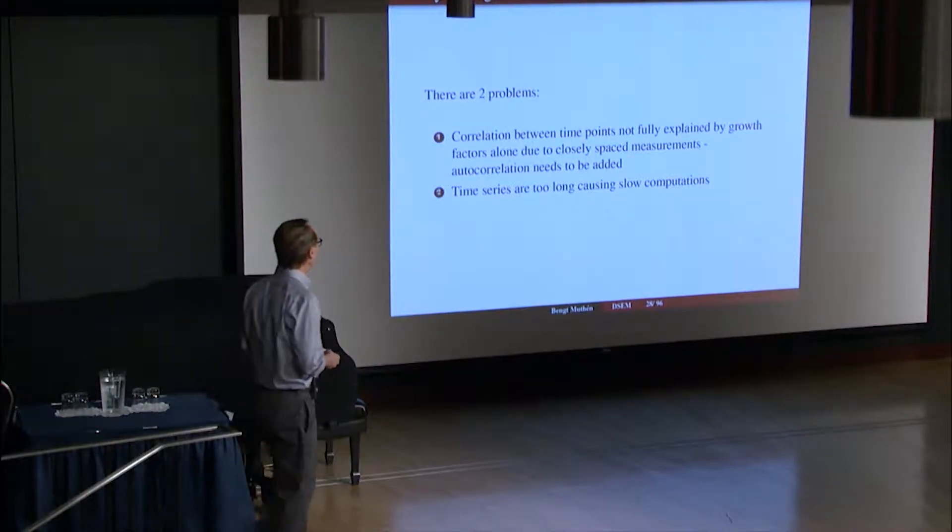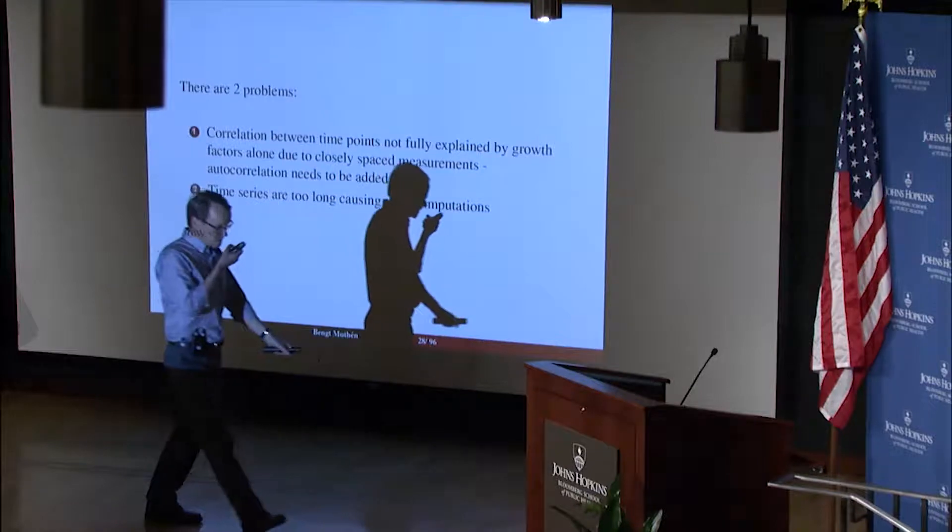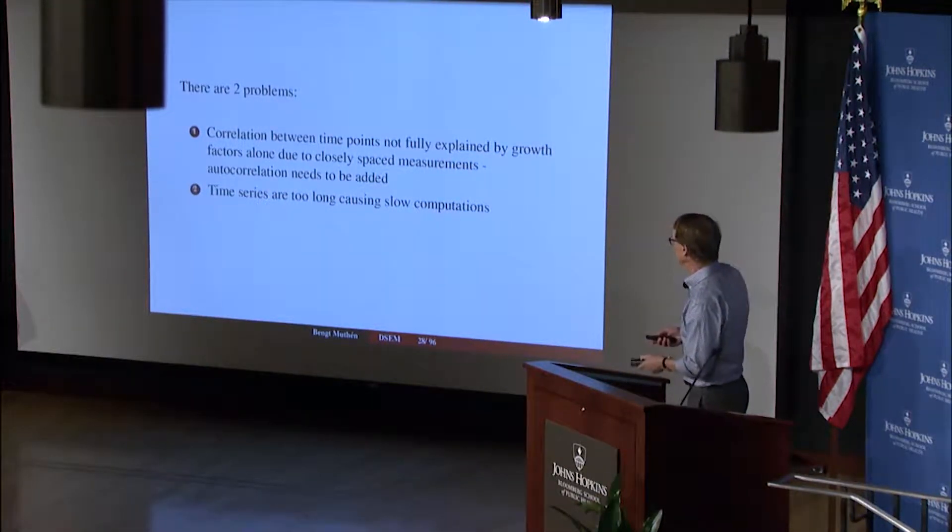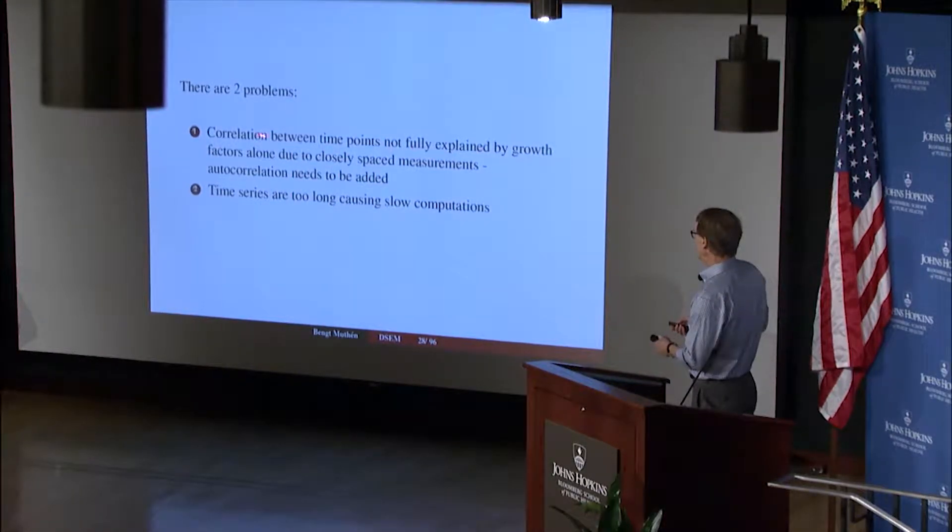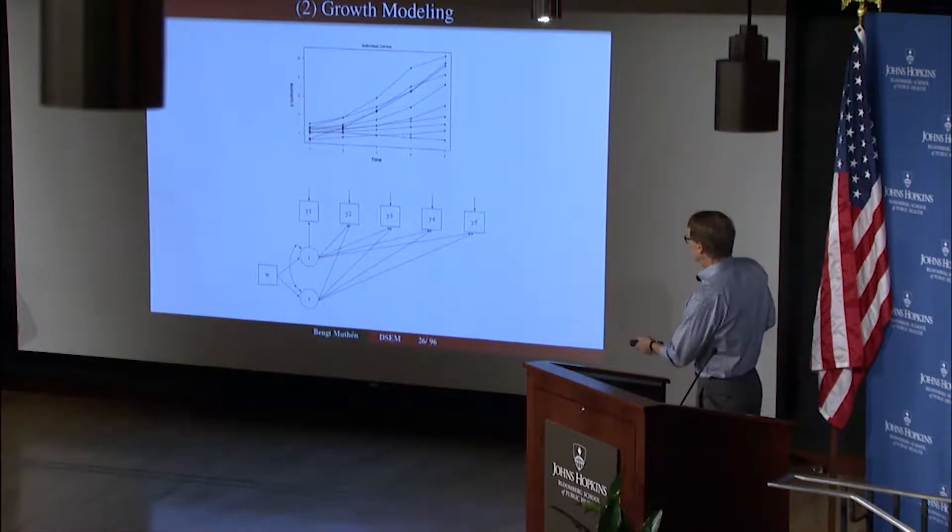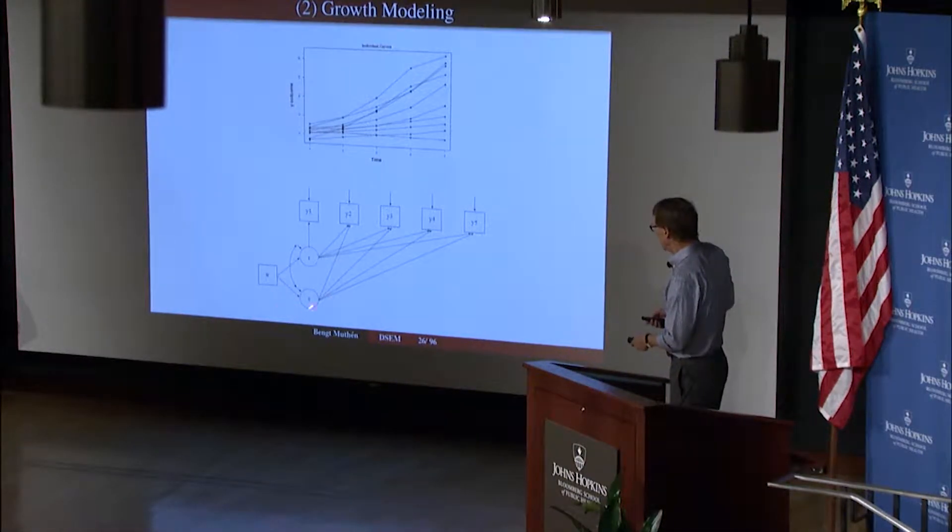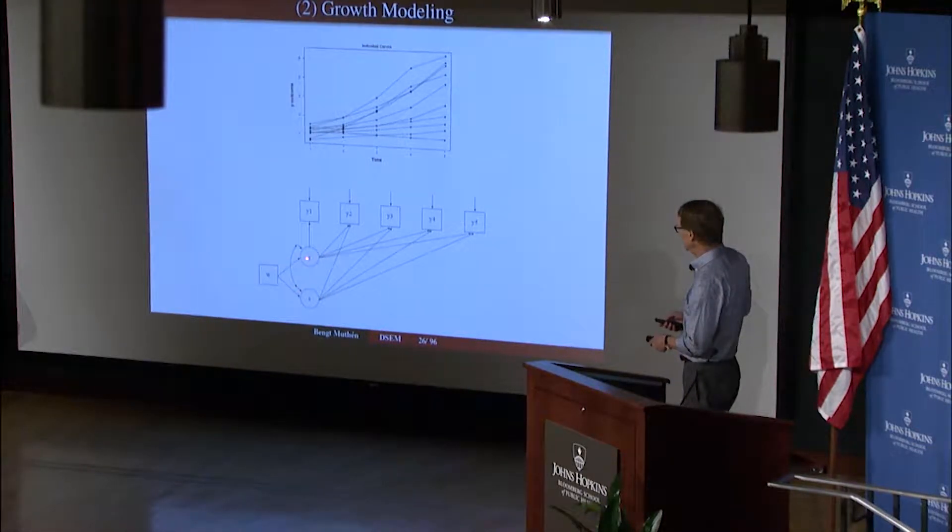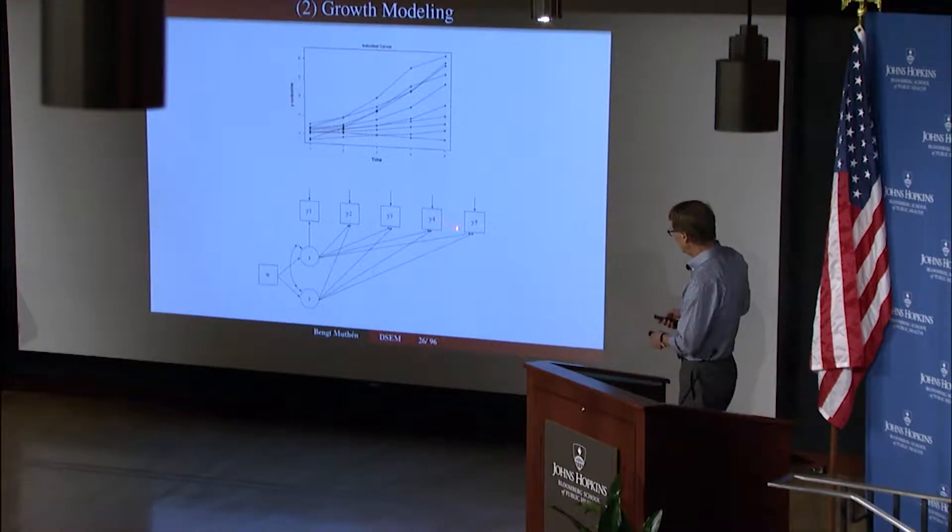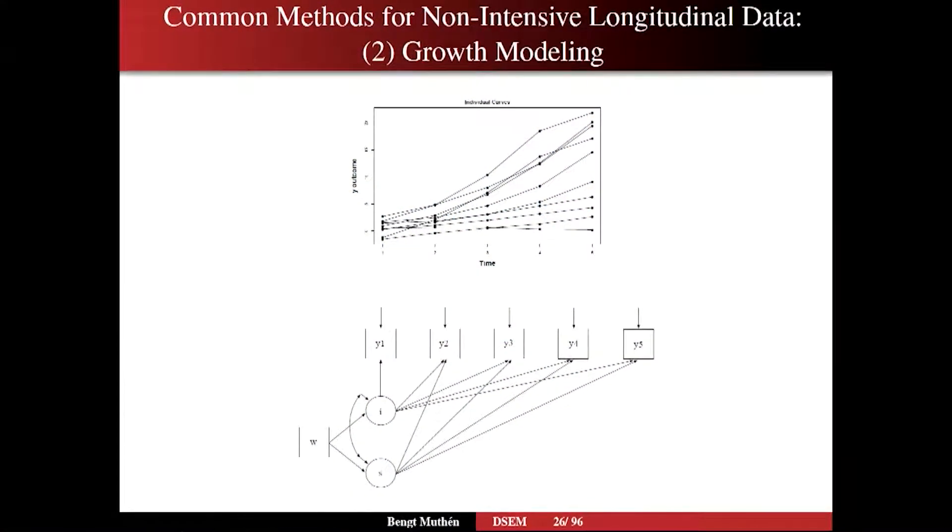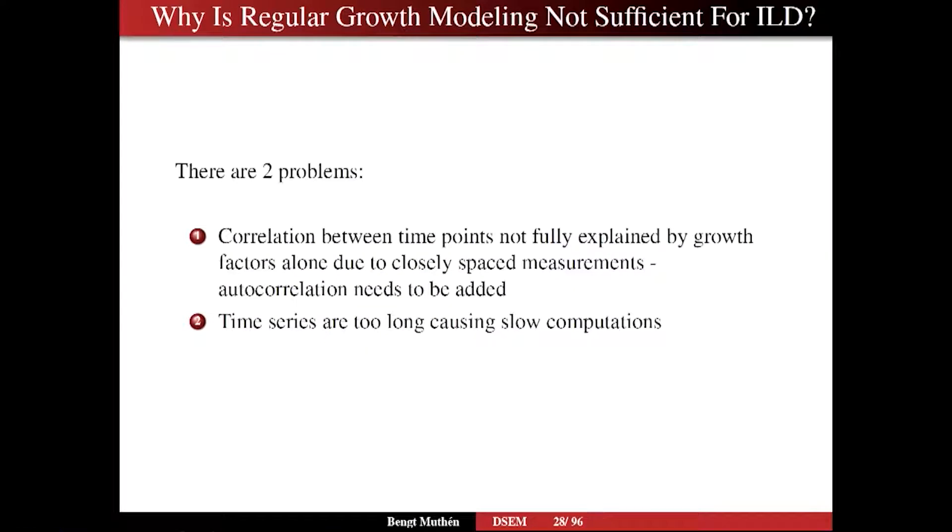Why is regular growth modeling not sufficient for intensive longitudinal data? It helped me to think of two problems. It says correlation between time points is not fully explained by the growth factors. Let's go back here and take a look at that. If you look at slide 26, not only do these latent variables or random effects variables vary across individuals, they also explain why the outcomes correlate across time—the so-called intraclass correlation. These variables correlate across time because they're influenced by the same variables. So we describe correlation between time points. And what we're saying now is correlation between time points is not fully explained by growth factors alone because with ILD data we have very closely spaced measurements, so you need to add an autocorrelation on top of the correlation that the growth factors or random effects explain.